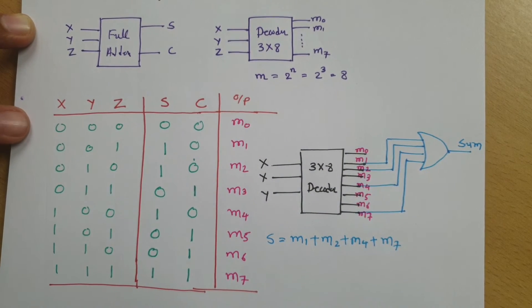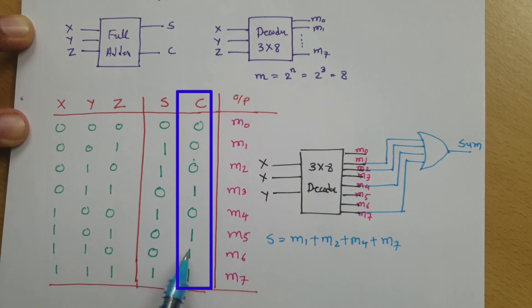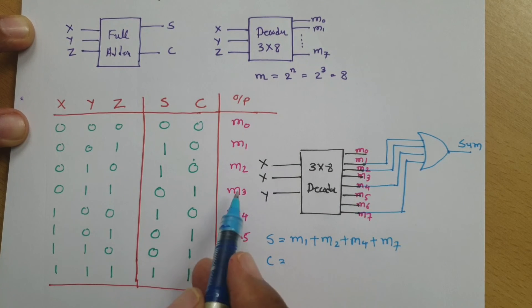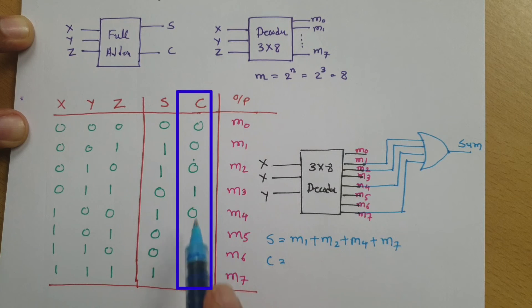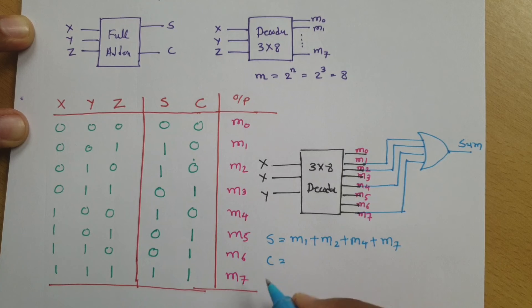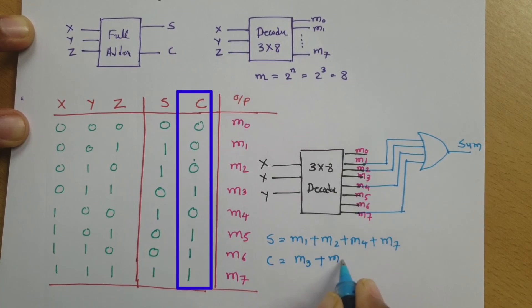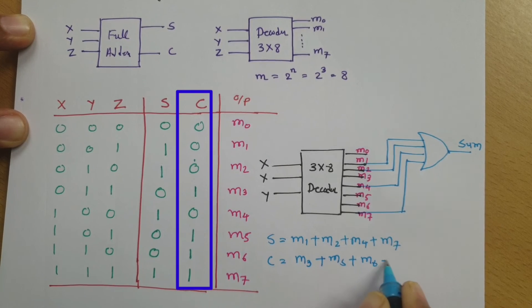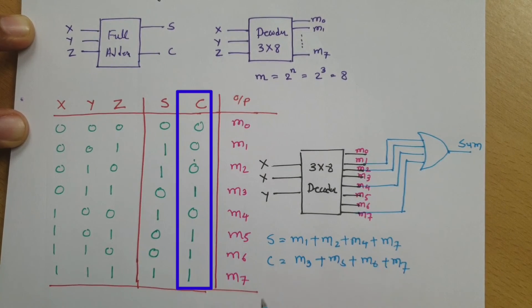Now if you observe carry, carry locations are at these locations. I can say my carry is happening at terminal M3, M5, M6, and M7. So I can say carry equals addition of all this terminals. Carry equals M3 plus M5 plus M6 plus M7.